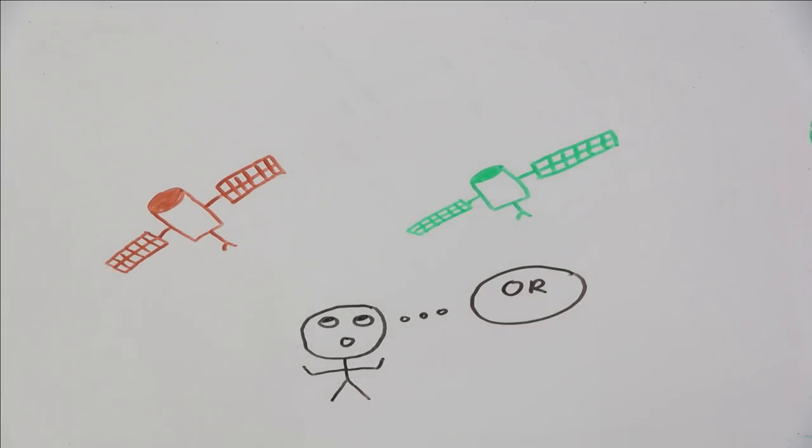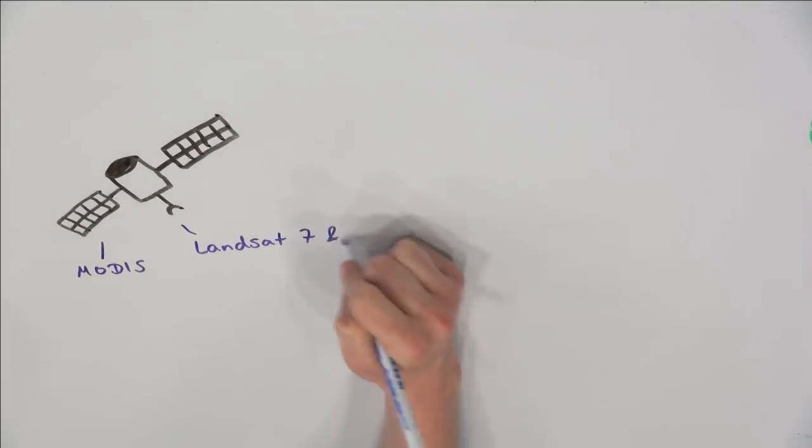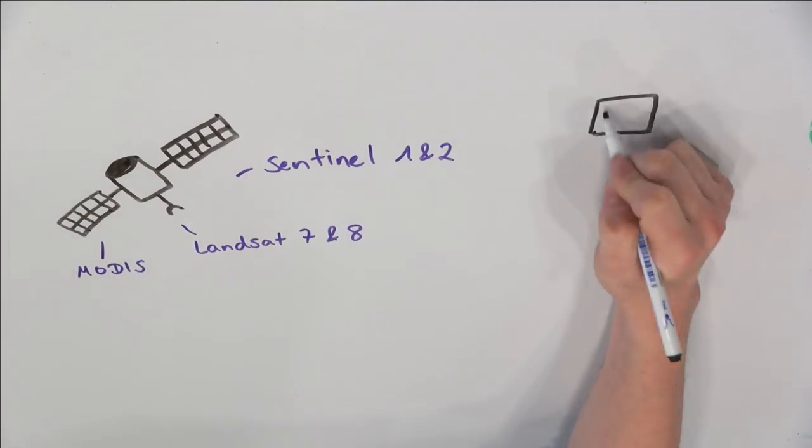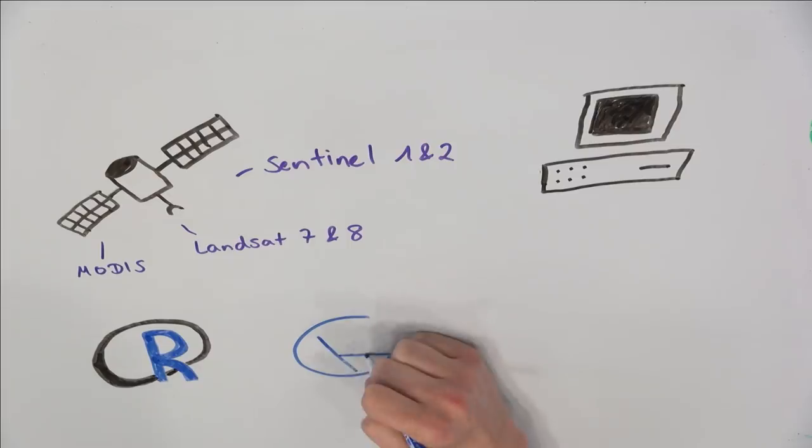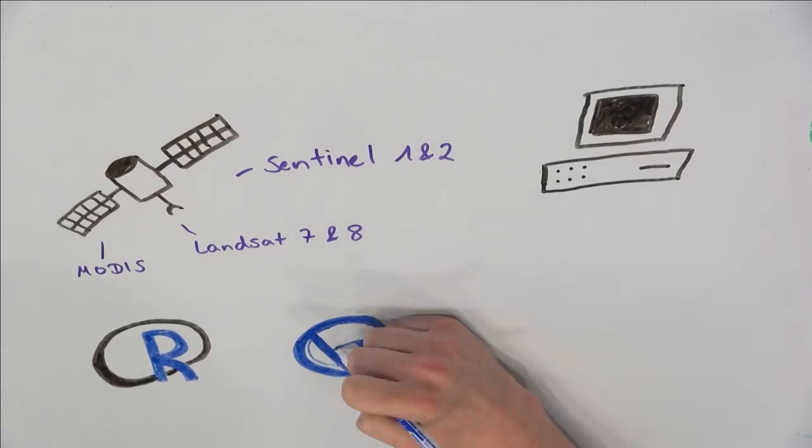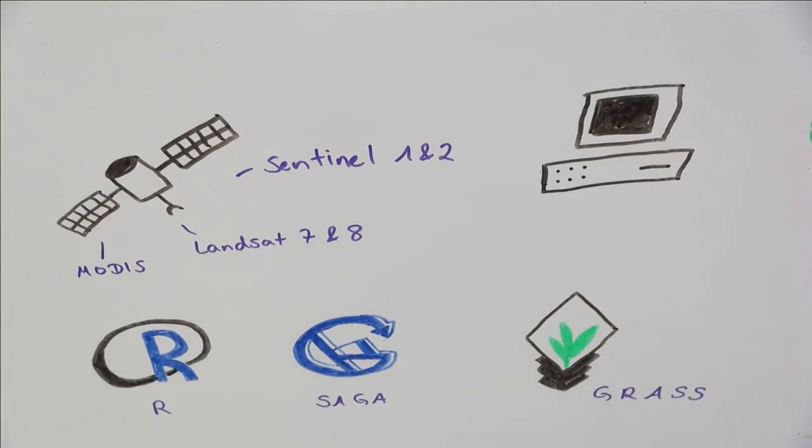We are now at a point where both open source multispectral and radar data is easily available for the entire globe, and our computers and software have become more powerful. In fact, many of the tools needed for different types of satellite data fusion are already available in open source software. This means that satellite data fusion is no longer only feasible for remote sensing specialists.